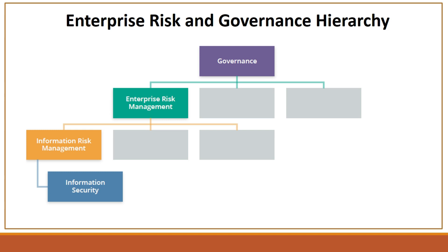There are four areas in terms of cybersecurity which are highly impacted in governance and risk management. The first is governance. This includes the policies, processes, and internal controls that comprise how an organization is run — everything from the structure and policies to the leadership and other mechanisms for management.